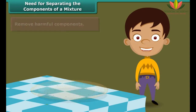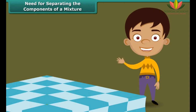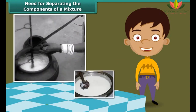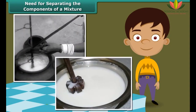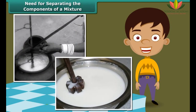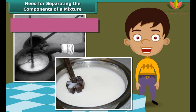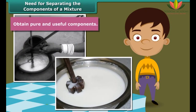When we churn milk or curd, we get two different but extremely useful products — butter and buttermilk. Thus, the third reason for separating the components of a mixture is to obtain pure and useful components.